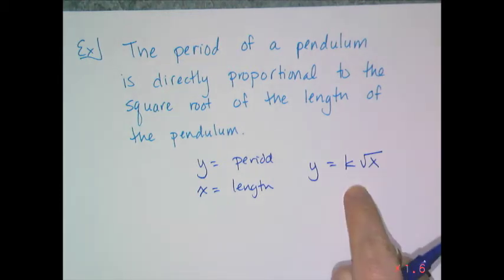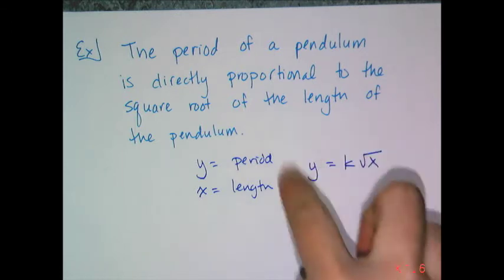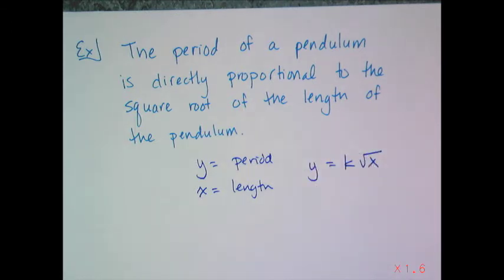Now I don't know what that constant is. That constant is going to depend on the pendulum. So this is some generic equation. But if I want to write a specific equation for a specific type of pendulum, then I need to find out what k is. I need more information because this is too vague.